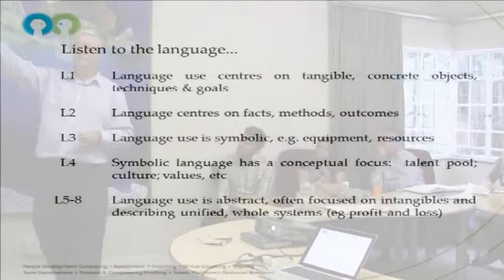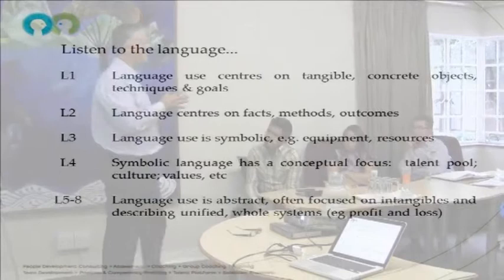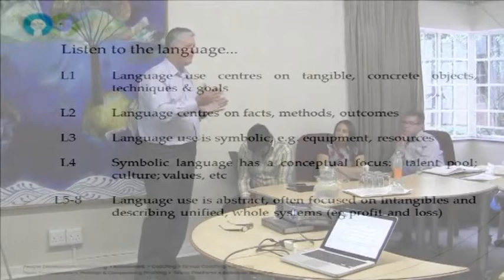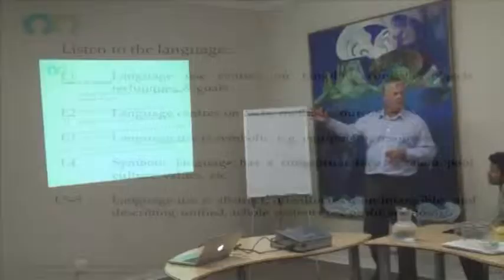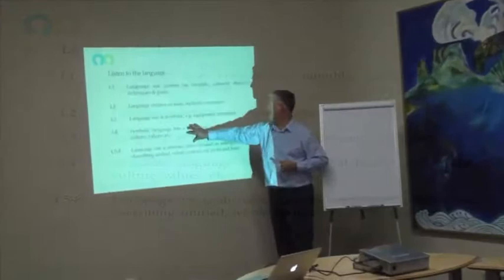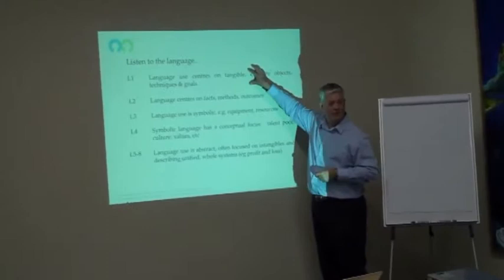Level 3 — best practice — language uses symbolic forms. Equipment and resources are less about what the thing does; it's about throughput and how it's going to change the workflow in the organization. Level 4 uses symbolic language: talent pools, culture, values. The sort of stuff that if you lock this person and this person on a desert island, the language that they'll develop together will be this person's language.